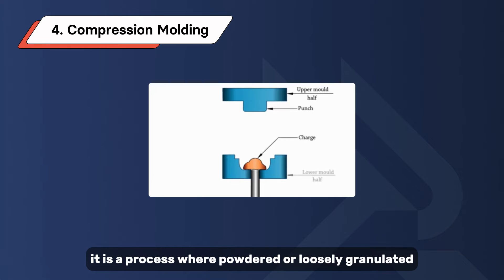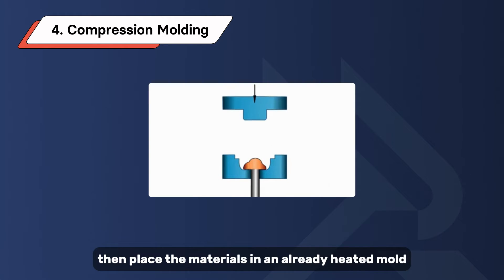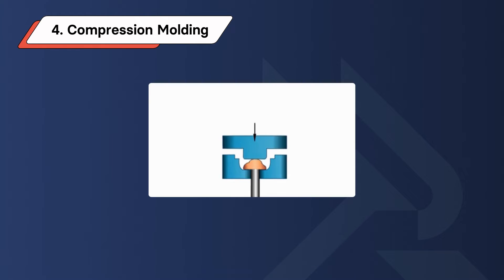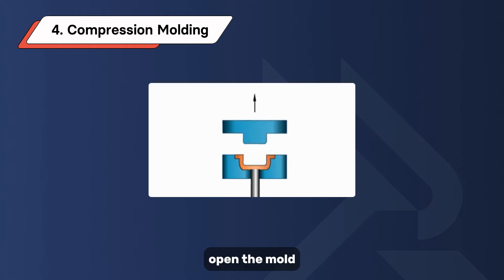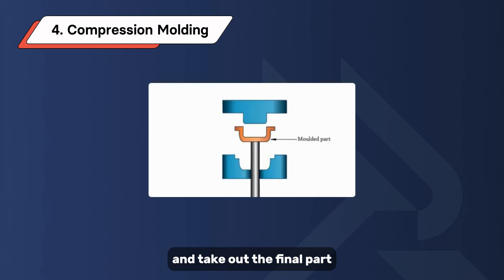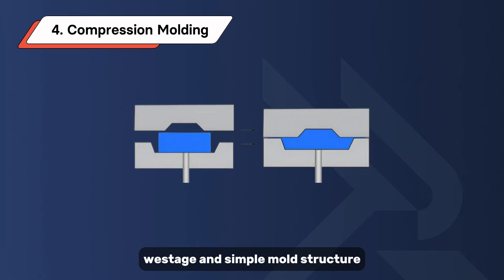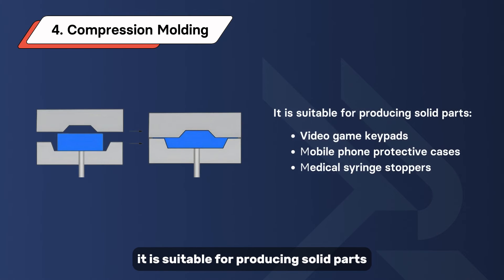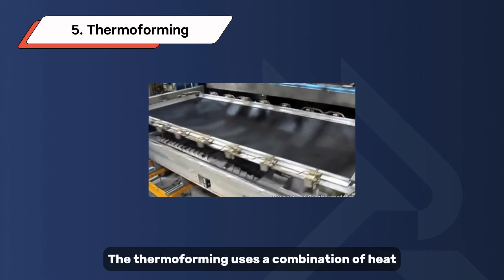Blow molding is mainly used for hollow components such as water and soda bottles, storage tanks, and plastic drums. Compression molding is different from the others — it is a process where powdered or loosely granulated solid plastic is placed directly into a mold. The materials are placed in an already heated mold, the two halves are closed tightly, and enough pressure and heat are applied to ensure the plastic completely spreads over the mold cavity. The mold is then opened and the final part removed.